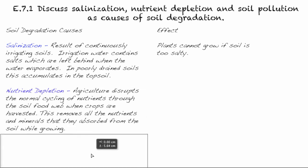The second cause is nutrient depletion. A nutrient is something that a plant needs to grow. Agriculture actually disrupts the normal cycling of nutrients through the soil food web when crops are harvested. This removes all the nutrients and minerals that they absorbed from the soil while growing. In other words, as nature goes, a plant will grow and then die in the same location. Under agriculture it grows, then we cut it and move it hundreds to thousands of kilometers away.